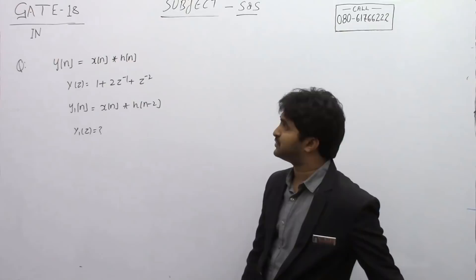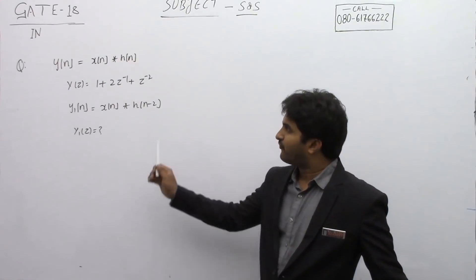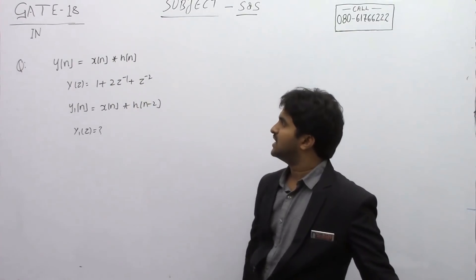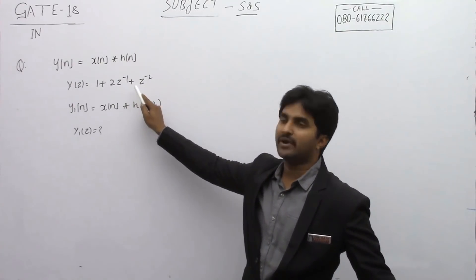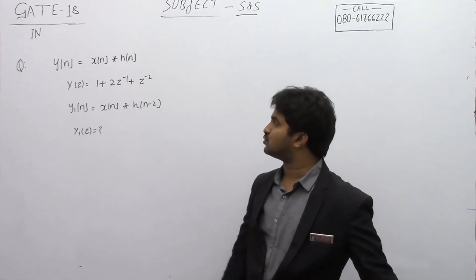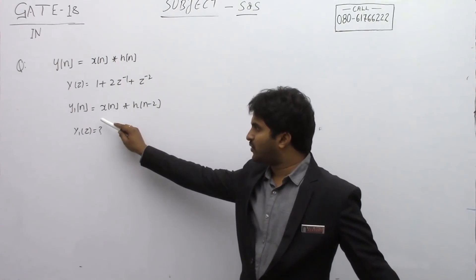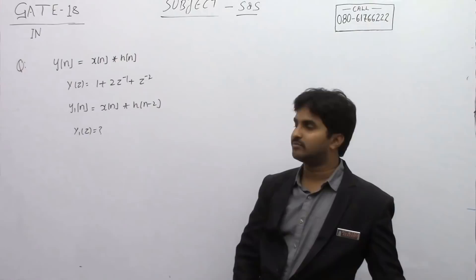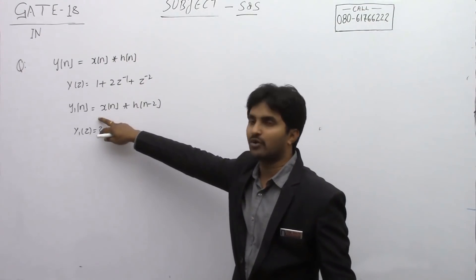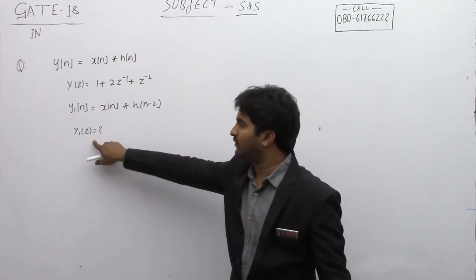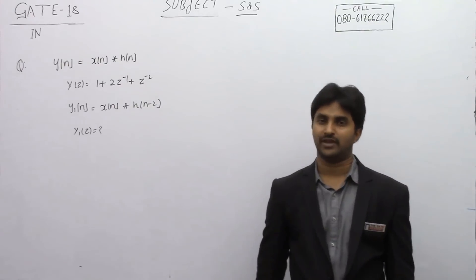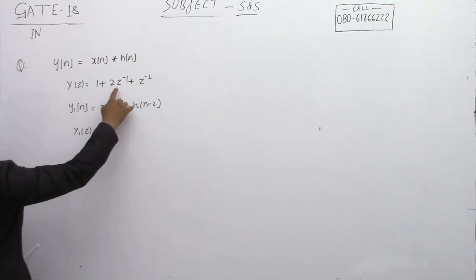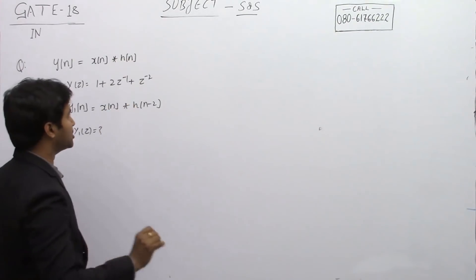Y(n) is given as x(n) convolved with h(n). The Z-transform Y(z) is equal to 1 plus 2z⁻¹ plus z⁻². Now Y1(n) is given as x(n) convolved with h(n-2), and we have to find the Z-transform of Y1(n). So Y(z) equals 1 plus 2z⁻¹ plus z⁻².